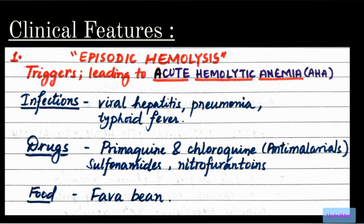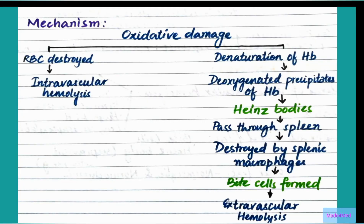In the clinical features, there is episodic hemolysis with triggers that lead to acute hemolytic anemia. Acute hemolytic anemia is caused by various triggers including infections, drugs, and food. Infections include viral hepatitis, pneumonia, and typhoid fever. Drugs include primaquine and chloroquine (anti-malarials), sulfonamides, and nitrofurantoins. Food triggers include fava beans, a phenomenon called favism.